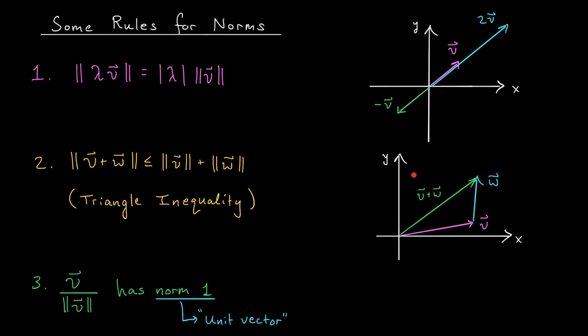To see why this is true, consider the following picture. Suppose that you're an ant trying to walk from the origin to this point over here, and you're feeling pretty lazy today, so you want to take the path of shortest distance. Well, it probably makes sense. You should walk in a straight line from the origin to this point over here. The shortest distance would be the length of V plus W.